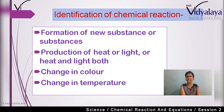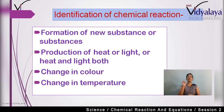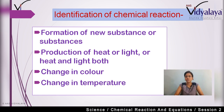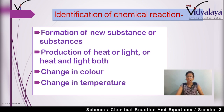So the next thing is: identification of a chemical reaction. How do we know that any chemical reaction is occurring? First, there will be a formation of a new substance or new substances. Second, there will be production of heat or light, or both heat and light. Third, there will be a change in colour. Fourth, there will be a change in temperature. So these are the four points through which we can identify whether a chemical reaction is occurring or not.